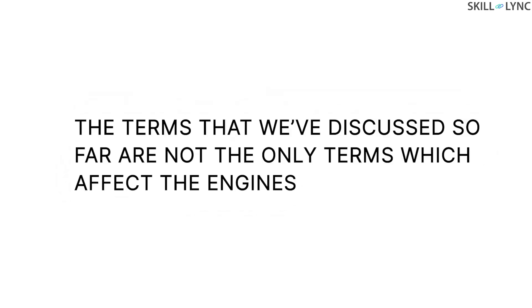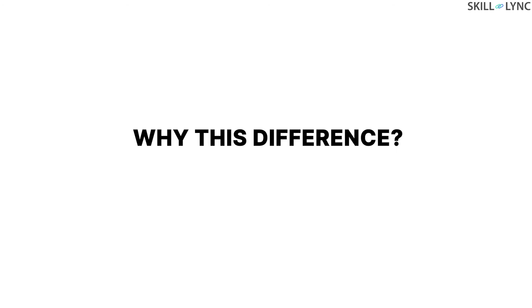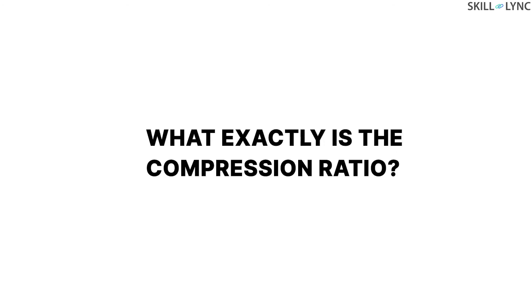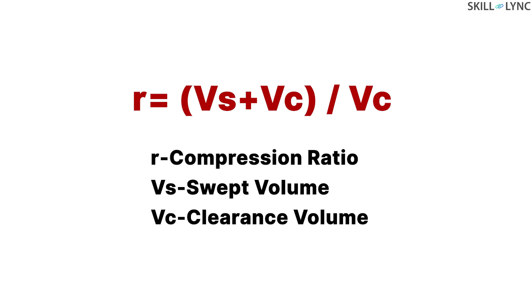The terms that we have discussed so far are not the only terms which affect the engines. For example, a 998cc engine might have a higher efficiency than another 998cc engine. This difference in engine performance is the result of a different compression ratio. What exactly is the compression ratio? As the piston reaches the top dead center, some vacant space is left between the TDC and the cylinder head. The volume of this space is called clearance volume. The ratio of total volume of the cylinder to this clearance volume is known as the compression ratio: r = (Vs+Vc) / Vc.